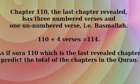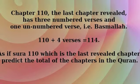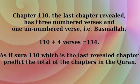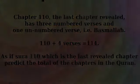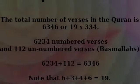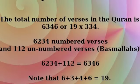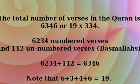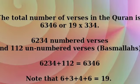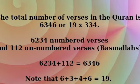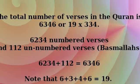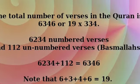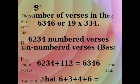The last chapter revealed is chapter 110. It has 3 numbered verses and 1 unnumbered verse, so 110 plus 3 plus 1 equals 114 — the total number of chapters in the Quran, i.e., 19 times 6. It is as if the last chapter revealed predicts the total number of chapters of the Quran. The total number of verses is 6,346, or 19 times 334, consisting of 6,234 numbered verses and 112 unnumbered verses. Note that 6 plus 3 plus 4 plus 6 equals 19.